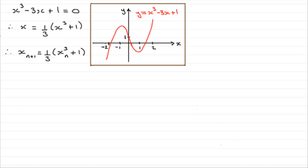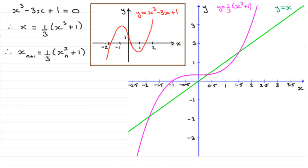I've got the graph here. You can see we've got the graph of y equals a third x cubed plus 1 and the graph of y equals x, with three intersections visible. If we project back these values onto the x-axis, you'll see that this root is very close to minus 2, this one is close to 0.5, and this one is very close to 1.5 — corresponding to the three roots of our original equation.